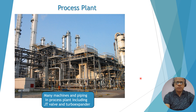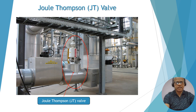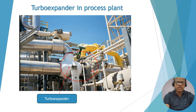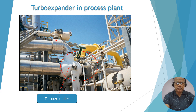You can see the view of the plant processes — it has many machines, pipings, valves, etc. Here you can also see the turbo expander and the JT valve. This is the JT valve. Similarly, this is the turbo expander in operation with the plant process. This side is the expander and the other side is the compressor. This is the IGV, this is the expander inlet pipe and outlet pipe, and similarly the compressor inlet and compressor outlet.